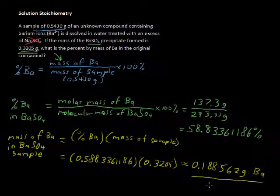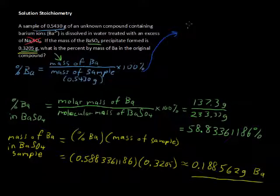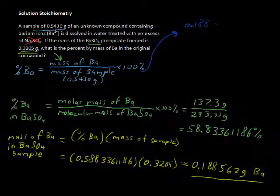That's not our answer yet because what we want to know is the percent of barium in the unknown compound. But we do know, so far, we know how much barium was in the original compound. So all we have to do is now we can plug in what our unknown was up here, and that is the mass of the barium. We found how much barium was being contributed to this new precipitate, this barium sulfate that formed. So I'll put that mass of the barium, 0.188562 grams of barium over the mass of the sample, which was 0.5430 grams, and of course I'll multiply it by the 100 percent right away.